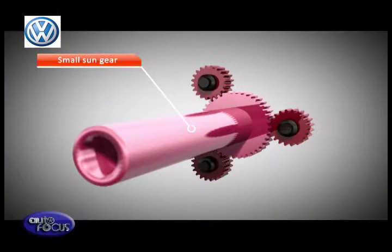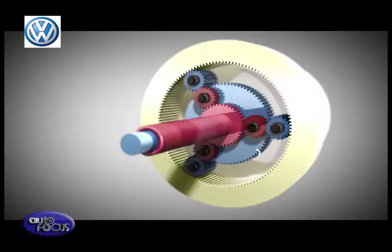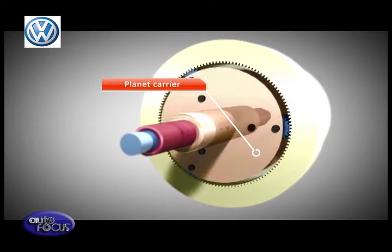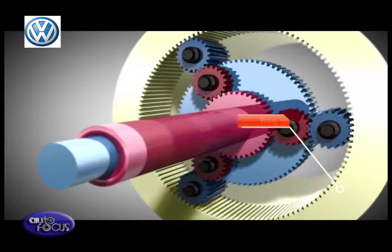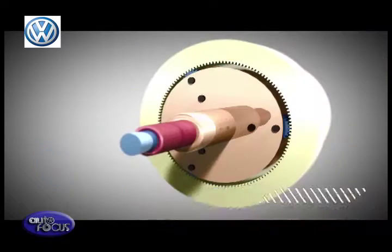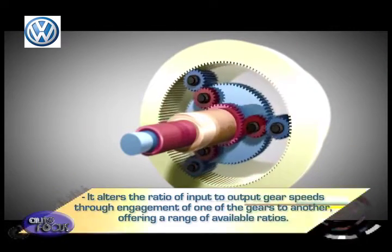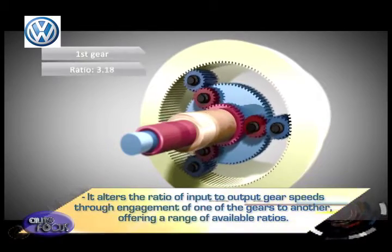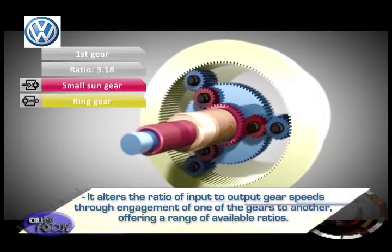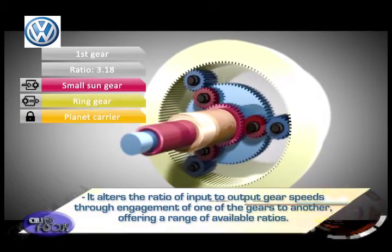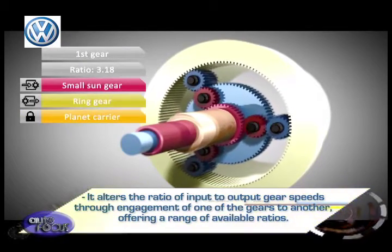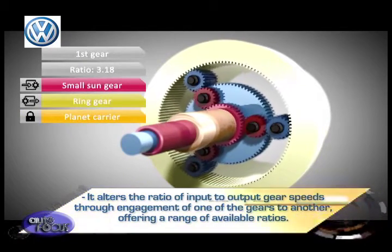The planetary gear set includes a sun gear, a planet carrier that holds multiple planet gears, and a ring gear. It alters the ratio of input to output gear speeds through engagement of one of the gears to another, offering a range of available ratios.